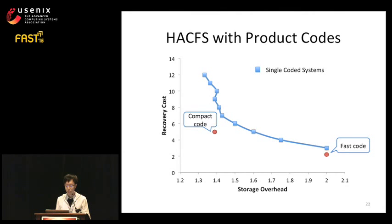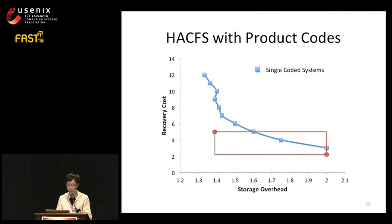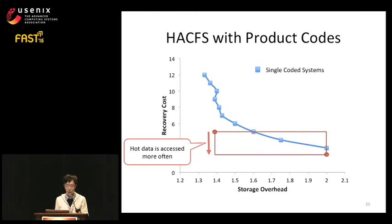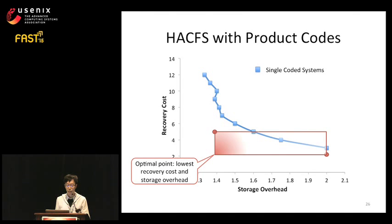We place these two codes in the trade-off space to compare them with existing single-code systems. The compact code is on the left and the fast code is on the right. With a specific workload, HackFS can achieve a point within the rectangle bounded by the two chosen codes. When cold data accounts for the majority, the storage overhead of HackFS approaches that of the compact code. When hot data is accessed more frequently, the overall recovery cost approaches that of the fast code. The optimal performance point is at the lower-left of this rectangle, and the data access skew from real workloads helps converge to this point.